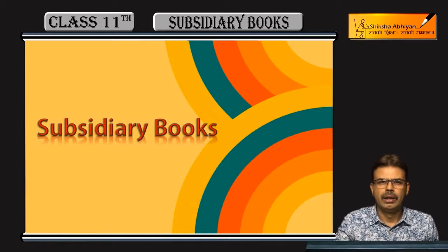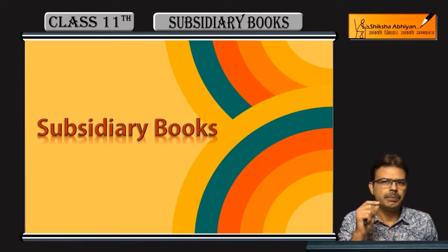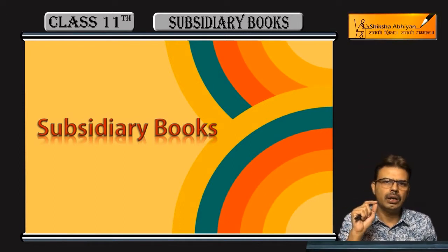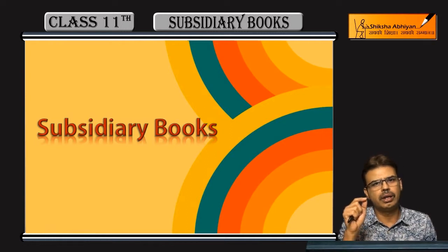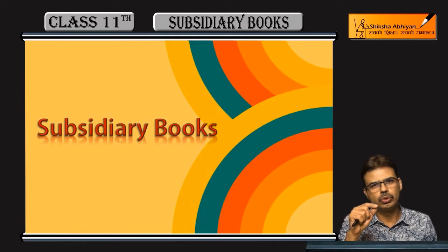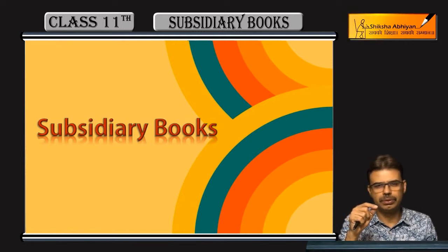We have discussed that when a firm has a lot of transactions, we have a different book for each category, such as cash for transactions, credit for some other books, personal transactions, personal ledgers.